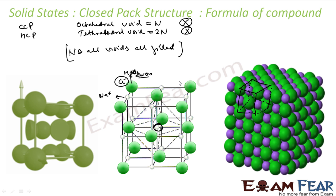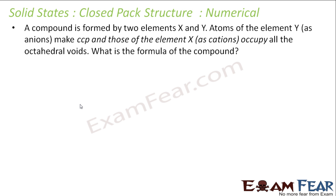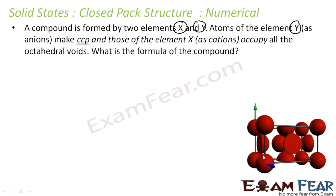With this, let me take one example to derive the formula of a compound. A compound is formed by two elements X and Y. Atoms of element Y form the CCP structure and act as anions occupying the lattice sites. Those of X occupy all octahedral voids. So Y occupies all the lattice sites in this closed packed structure.